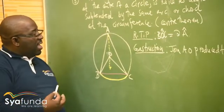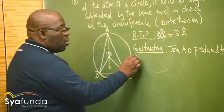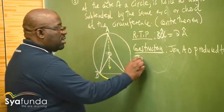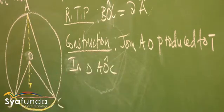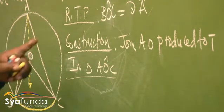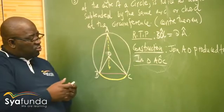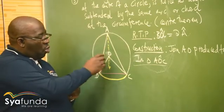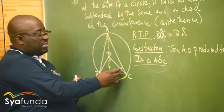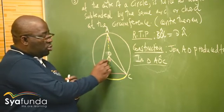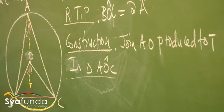I'm going to use triangle AOC first. Because this construction line divides things into two, I'll call this angle O1 and this angle A1 on one side, and O2 and A2 on the other side. The ones are on one triangle, the twos are on the other.